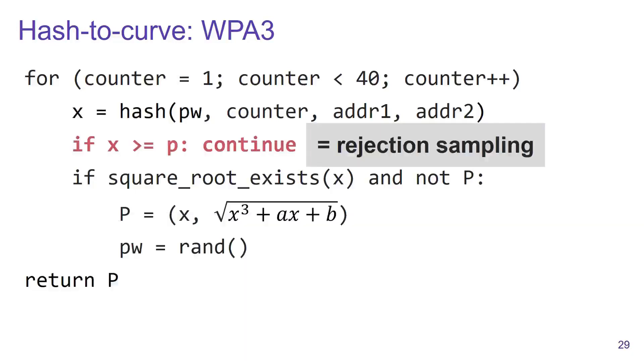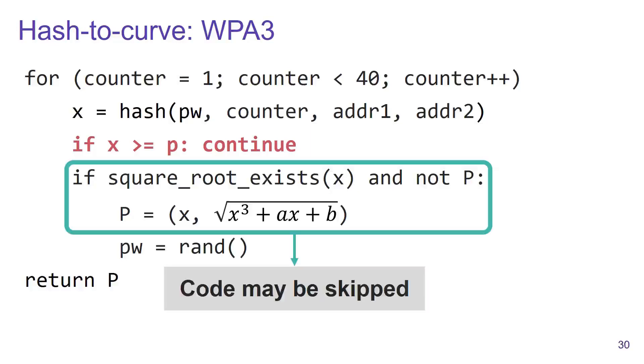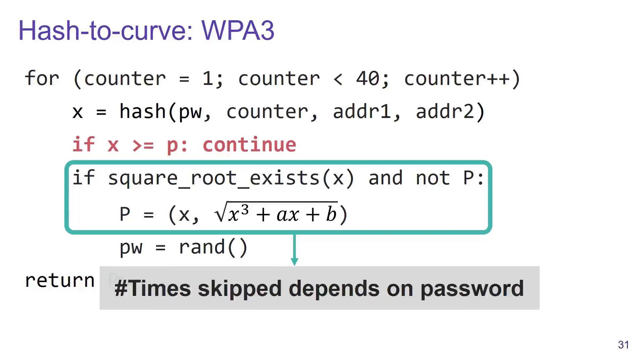So how did the designers tackle this issue? They used rejection sampling, which basically means they included an if test to check if the x value is higher or equal to the prime, and if so, they simply execute another iteration. So now the question is: are all side channel leaks avoided? Unfortunately, they are not. The problem is that this piece of code may be skipped in an iteration, and more problematic is that the number of times this code is skipped depends on the password.